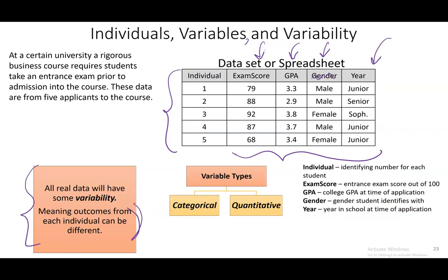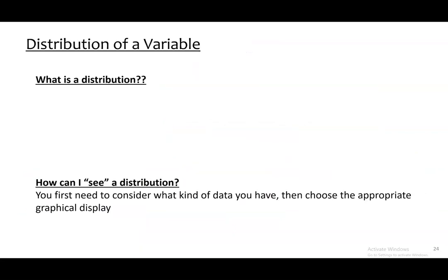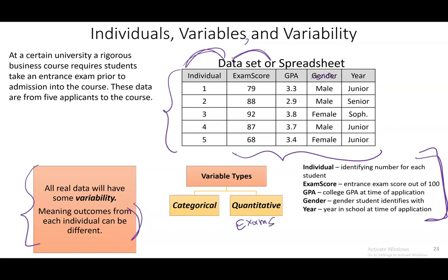We've described what each variable is. This column is a subject identifier. Exam score is quantitative. GPA is numeric and it would make sense to take an average, so GPA is also quantitative. Looking at sex — categorical, probably the survey only had two options. And then year: with options of freshman, sophomore, junior, and senior, those are categories, so year is categorical as well.